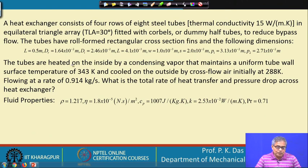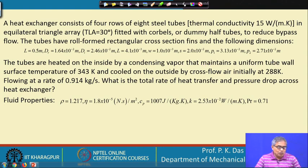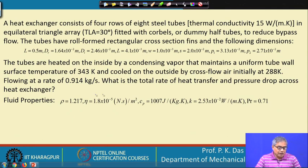The tubes are heated on the inside by condensing vapour that maintains a uniform tube wall surface temperature of 343 K and cooled on the outside by cross-flow of air initially at 288 K, flowing at a rate of 0.914 kg/s. We are asked to find the total rate of heat transfer and the pressure drop across the heat exchanger.